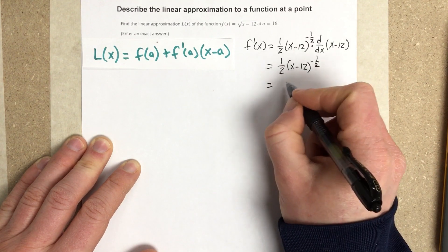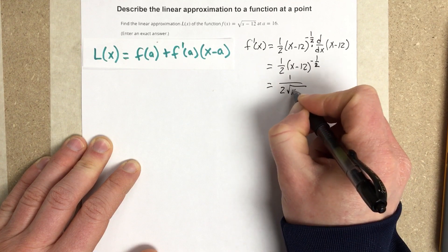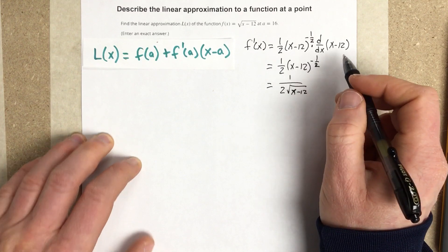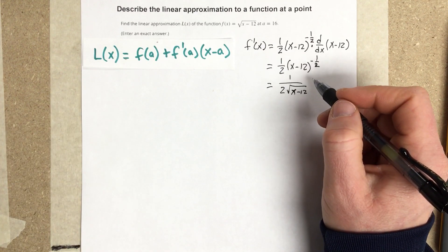So that can be written as 1 over 2 root x minus 12. When you evaluate that negative power, that moves it to the denominator.